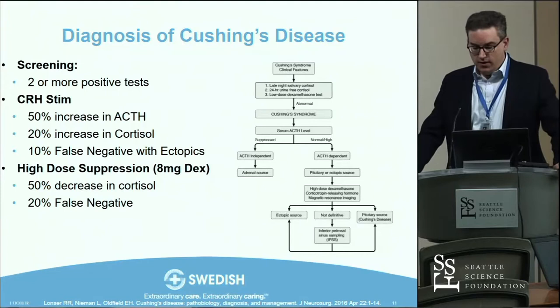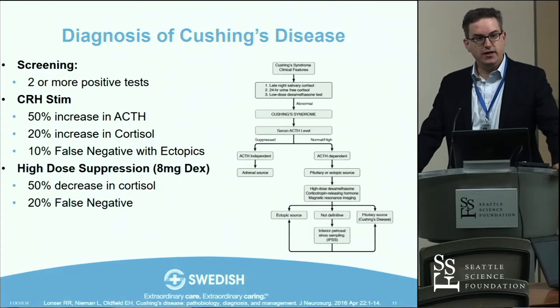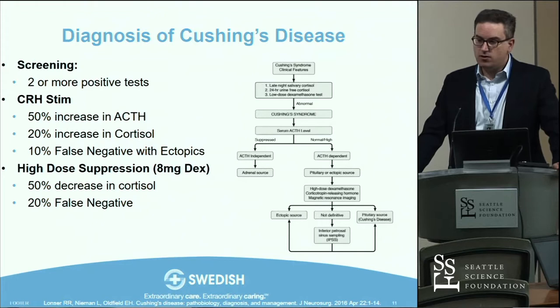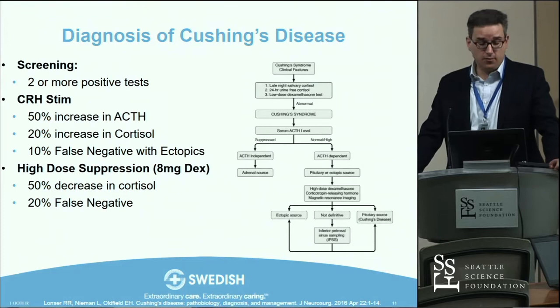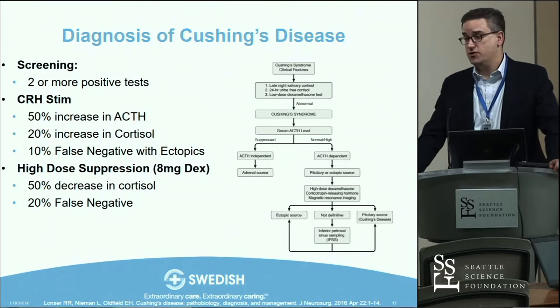One confusing aspect for surgeons and non-surgeons alike is the screening and diagnostic process for Cushing's disease. Current diagnostic criteria require at least two or more positive tests. Screening tests include fasting AM cortisol, random cortisol, midnight salivary cortisol, and 24-hour urinary free cortisol — you need at least two positive because false positives occur.